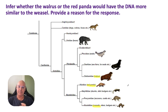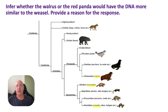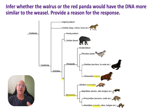The answer is the red panda, because the red panda and the weasel share a more recent common ancestor. This node here is the common ancestor shared by the weasel and the red panda. For the weasel and the walrus, we have to go further back in time to find their most recent common ancestor. So the red panda has DNA more similar to the weasel because they share a more recent common ancestor.